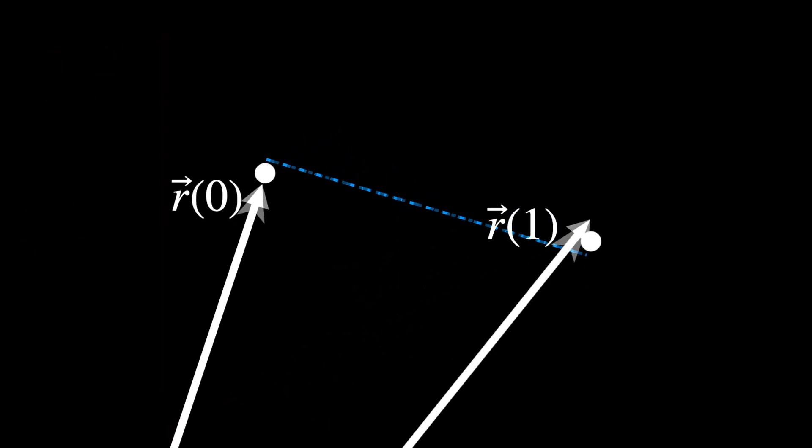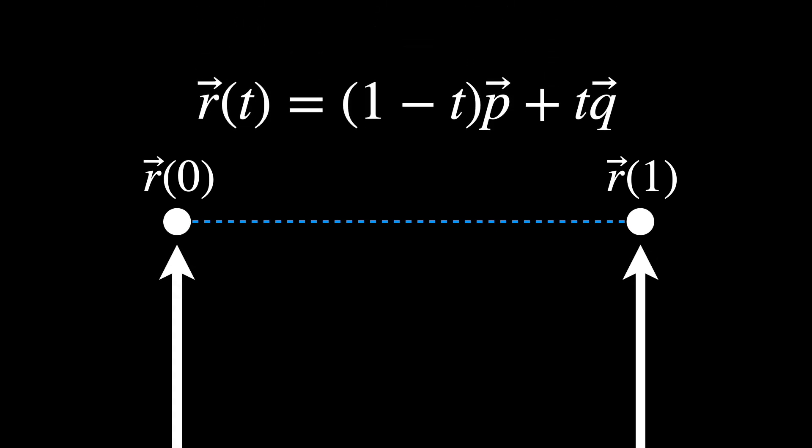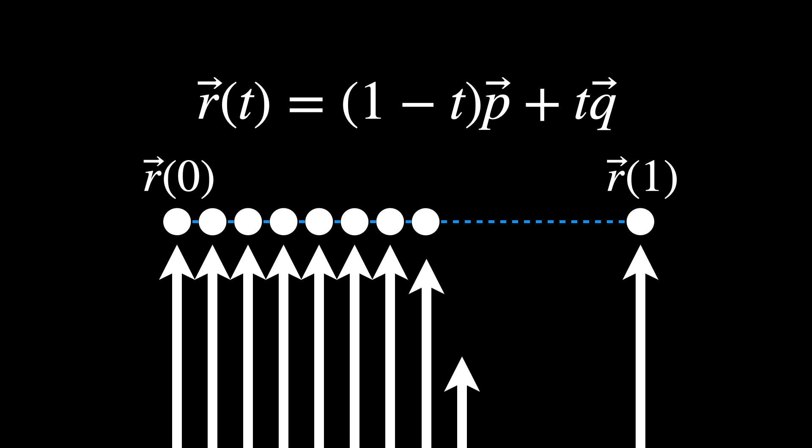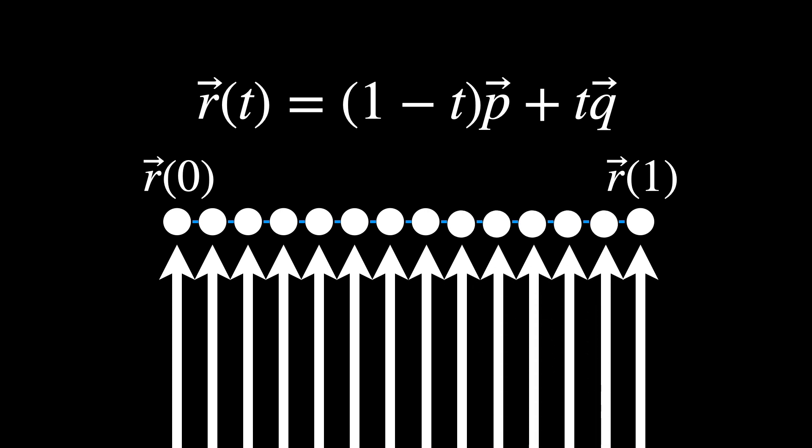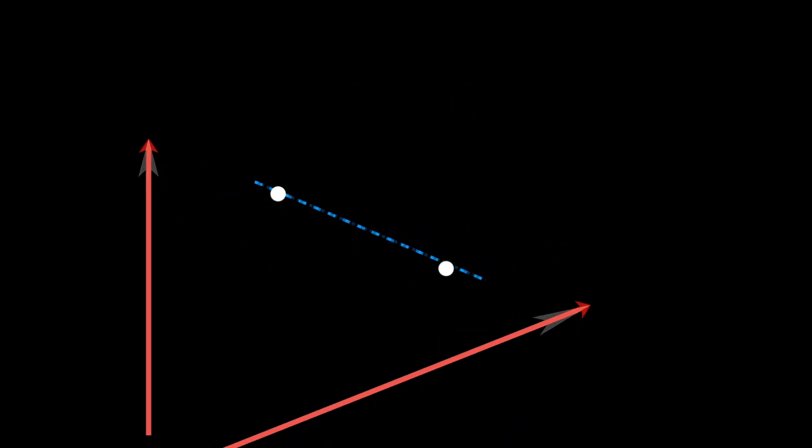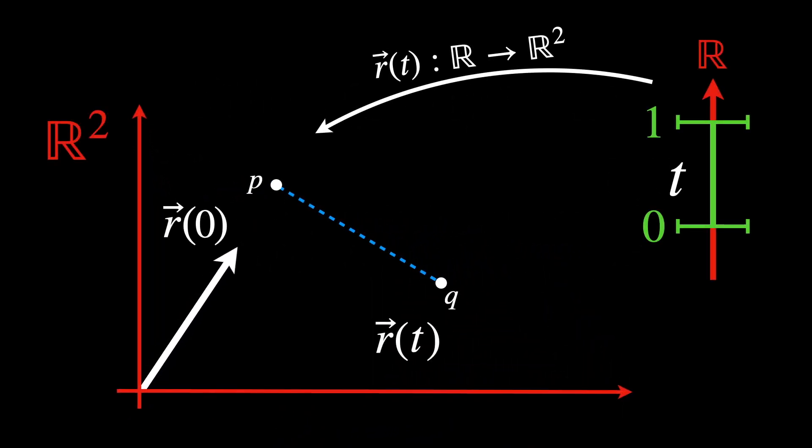For any value of t between 0 and 1, the formula R as a vector, which equals (1 - t) times the vector P plus t times the vector Q, gives us a point on the line segment directly between the vector P and the vector Q, effectively filling in the line segment. This basically means that if I replace t with 0, I will end up with the exact vector coordinates for the vector P, so (Px, Py).